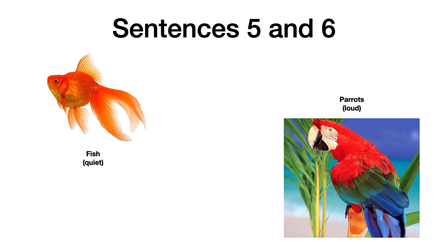Tienes que tener seis oraciones en total. Recuerda siempre hacer una con el primer animal y luego la otra con el otro animal. Ahora te voy a dar las respuestas, pero quiero que las veas una vez que ya hayas hecho tus oraciones. Si te cuesta, puedes mirarlas para ayudarte, pero no para copiarlas. La idea es que lo intentes — la práctica hace el maestro. Si no quieres ver las respuestas todavía, coloca pausa y comienza a trabajar en tu cuaderno.